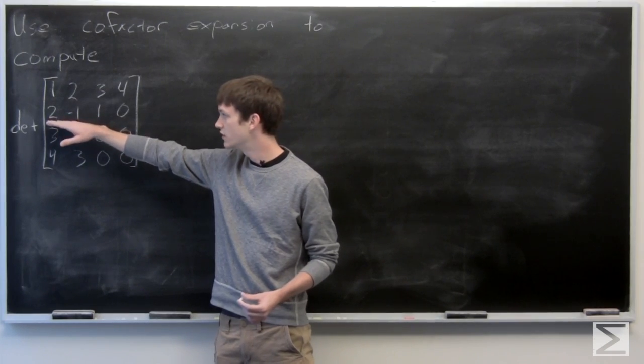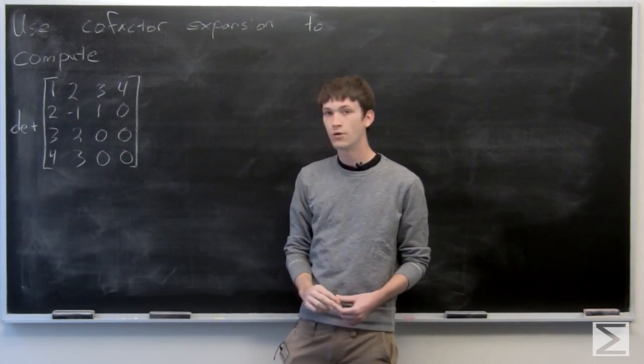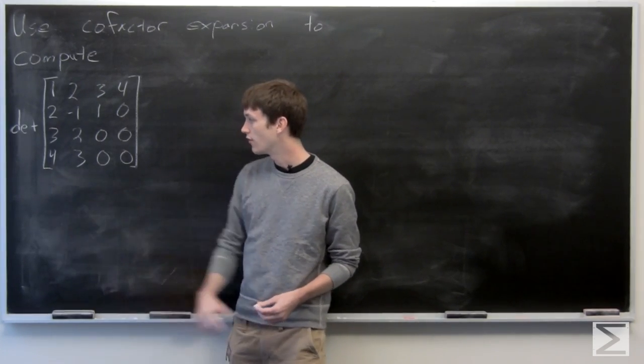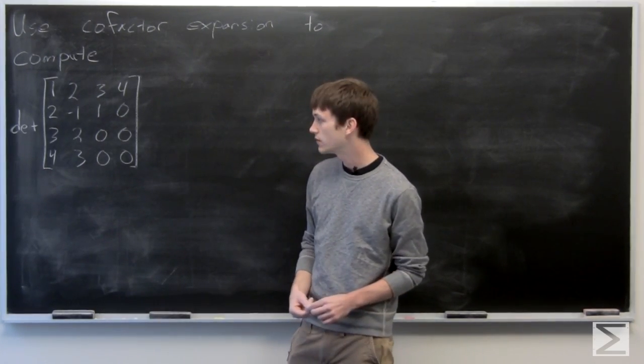Row 2 is 2, negative 1, 1, 0. Row 3 is 3, 2, 0, 0. And row 4 is 4, 3, 0, 0.